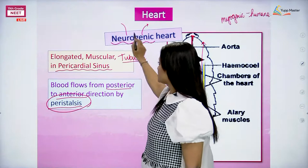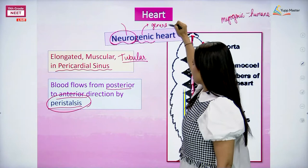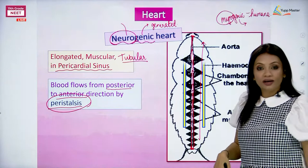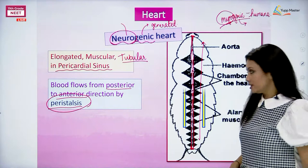Why neurogenic? Because neuro is for nervous system, and genic means the impulse is going to be generated with the help of the nervous system - genic stands for generated. When we talk about myogenic in humans, it is the muscle which causes the generation of the cardiac impulse - that is why it is called myogenic for humans.